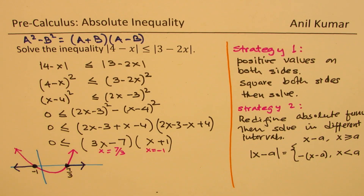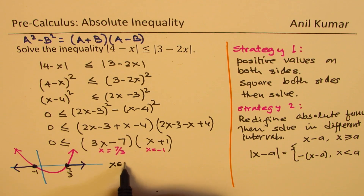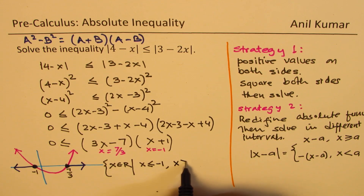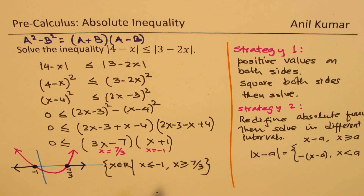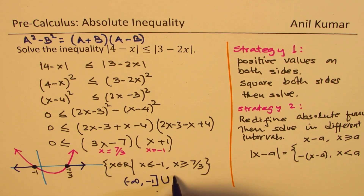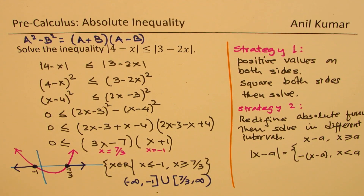Our interval is the region where the parabola is greater than or equal to zero, which is outside the two roots. So the solution is: x is less than or equal to minus 1, or x is greater than or equal to 7 over 3. In interval notation: from minus infinity to minus 1, closed, union from 7 over 3 to infinity, closed. Note you can never include infinity.